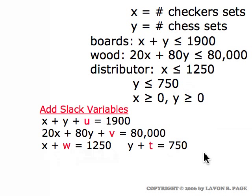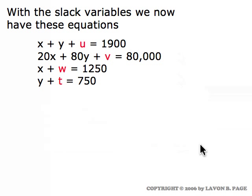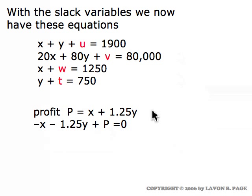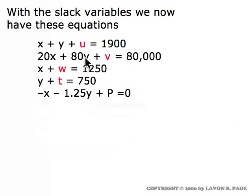We've taken our four constraints and introduced slack variables in all of them. The profit function in this case was P equals X plus 1.25Y — a dollar profit from each checker set and a dollar and a quarter profit from each chess set. We rewrite that in standard form: minus X minus 1.25Y plus P equals zero. We put it with the other equations, and those are all the equations that go into the initial simplex tableau.